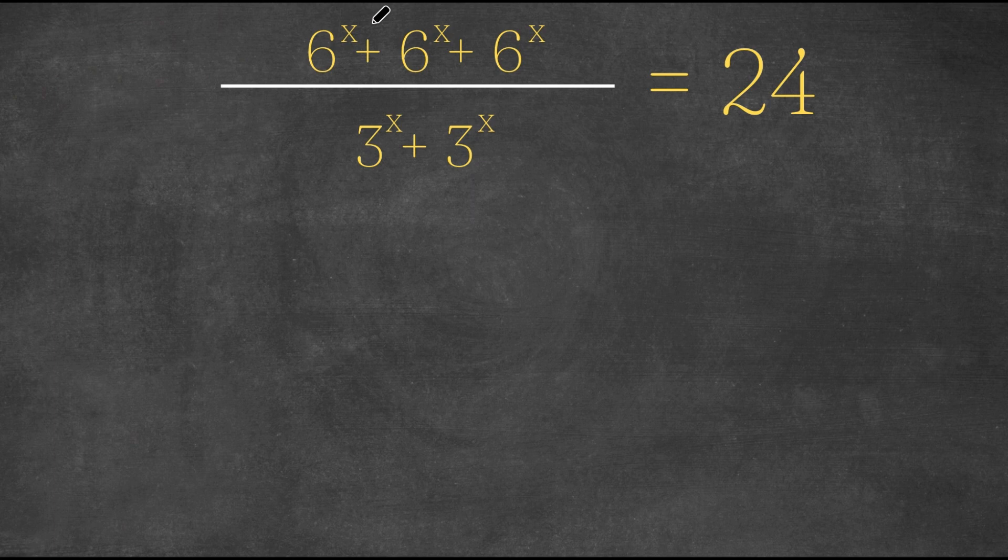So we have 6 to the power of x plus 6 to the power of x plus 6 to the power of x divided by 3 to the power of x plus 3 to the power of x equals 24.